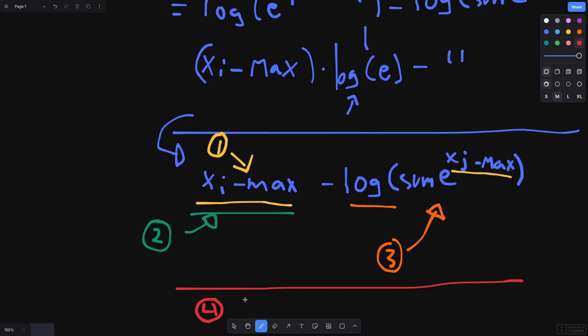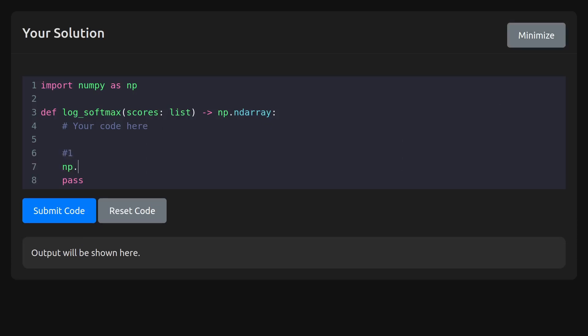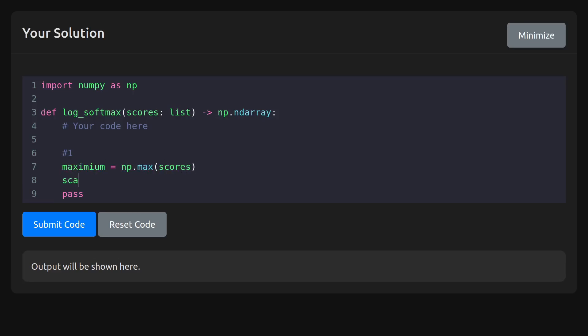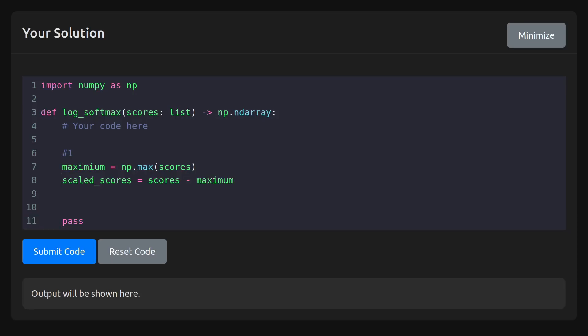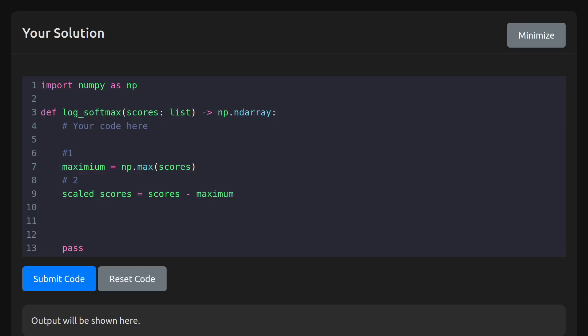And that should be pretty much it. Let's look at what the code looks like. So here we are. Basically the first thing I want is to get the maximum, so np.max of scores, and I'll call that maximum. And then we're going to scale our stuff, so scaled_score equals the scores minus the maximum. Now I have my scaled scores.